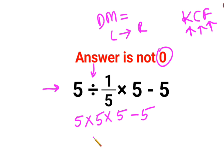So 5 multiplied by 5 is 25 multiplied by 5 minus 5. This then comes out to be 25 multiplied by 5 is 125 minus 5. So the answer for this question is supposed to be 120.